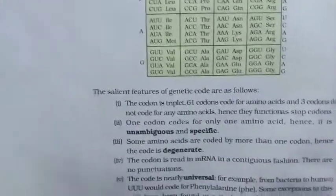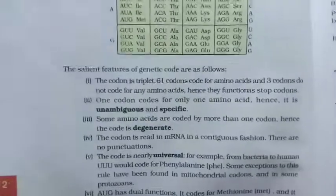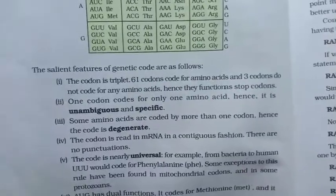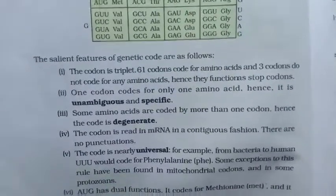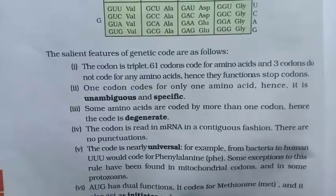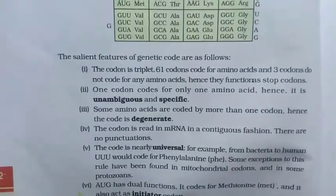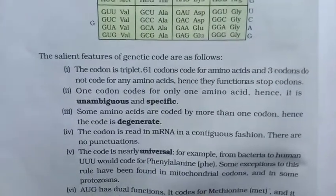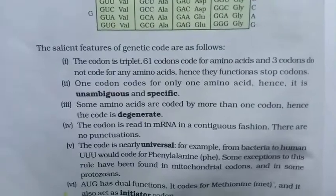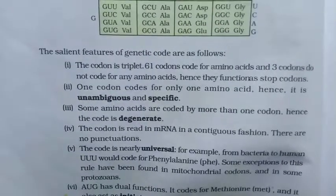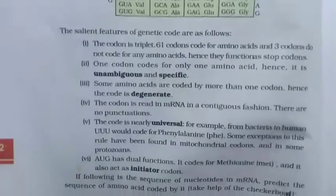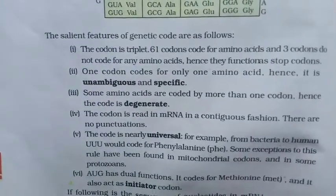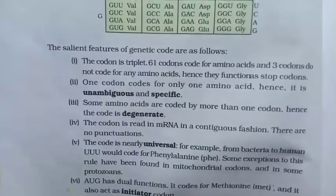The salient features of the genetic code are as follows. The codon is a triplet. 61 codons code for amino acids and 3 codons do not code for amino acids — hence they function as stop codons. One codon codes for only one amino acid, so the code is unambiguous and specific. Some amino acids are coded by more than one codon, hence the code is degenerate. The codon is read in mRNA in a contiguous fashion with no punctuations. The code is nearly universal — for example, from bacteria to humans, UUU codes for phenylalanine.